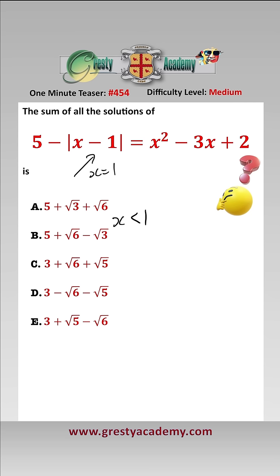First, let's look at x less than 1, and that means that 5 minus brackets 1 minus x equals x squared minus 3x add 2. That simplifies to x squared minus 4x minus 2 equals 0.